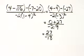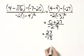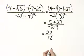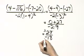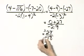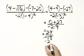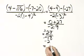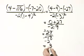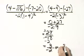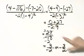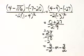Now let's divide. Notice we do have a common factor of 9. 27 divided by 9 is 3, and negative 18 divided by 9 is negative 2. So we can write this as 3 over negative 2, or we can write it as negative 3 halves. This simplifies to negative 3 halves.